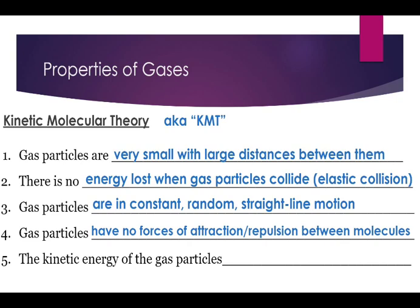They're constantly moving in straight lines in part because they have no forces of attraction or repulsion between them. So they're not going to get pulled into a curvy line to get pulled towards another atom or pushed away from it. They're constantly moving in straight lines. Until they hit something, they bounce off in another straight line.